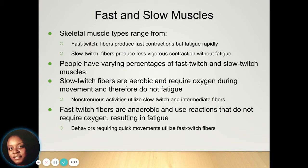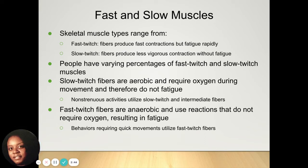Your muscles can move in fast or slow movements. Your skeletal muscles have fast twitch fibers that produce fast contractions, but when that happens your muscles can get very fatigued quickly. Slow twitch fibers produce those more rigorous contractions without the fatigue associated with them, so your muscles can continue to go. People are all going to have varying percentages of fast and slow twitch muscles.